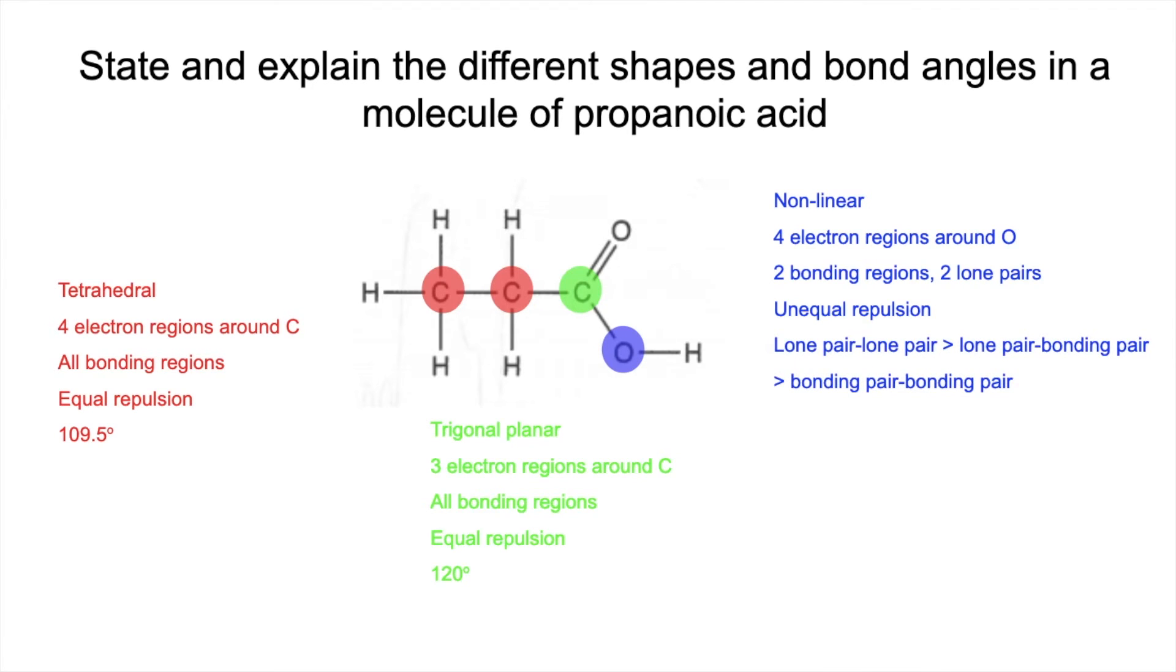So lone pair-to-lone pair repulsion is greater than lone pair-to-bonding pair repulsion, which is greater than bonding pair-to-bonding pair repulsion. That's a much better way of explaining it than just lone pairs repel more than bonding pairs.